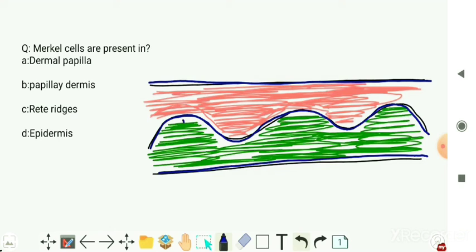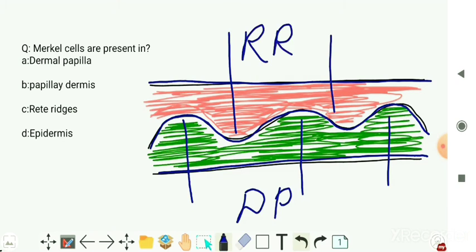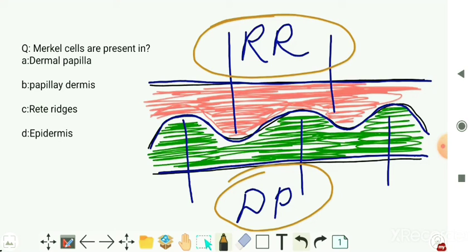As you can see here, these elevations are known as dermal papilla and these depressions are known as rete ridges. The dermal papilla are projections of upper dermis and rete ridges are projections of lower epidermis. The Merkel cells are present in the rete ridges.